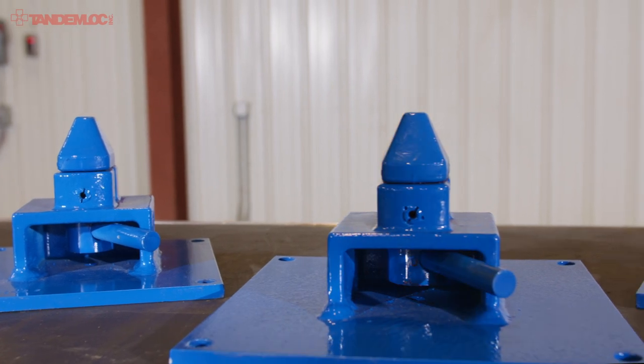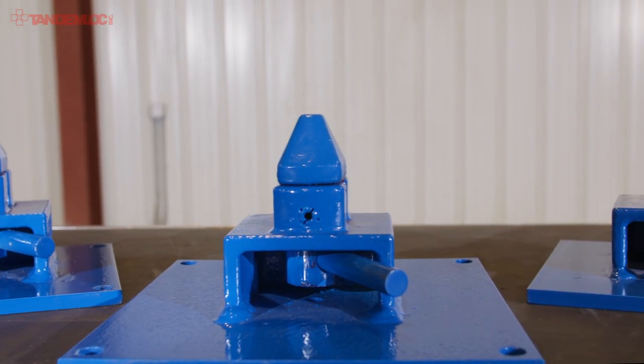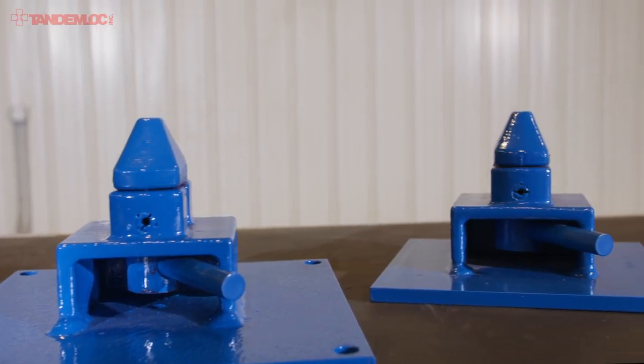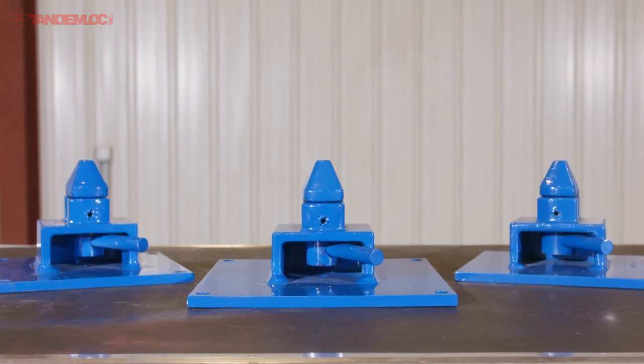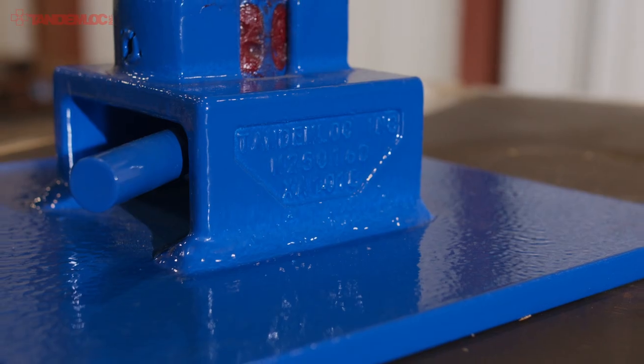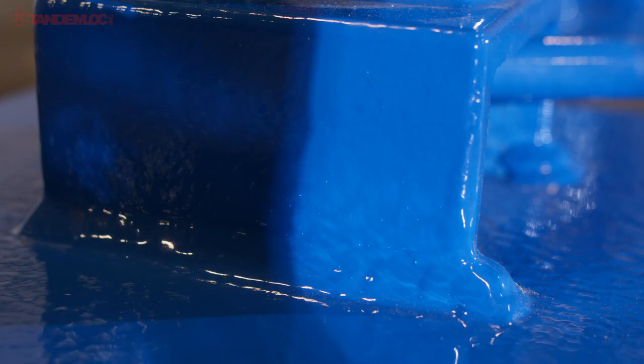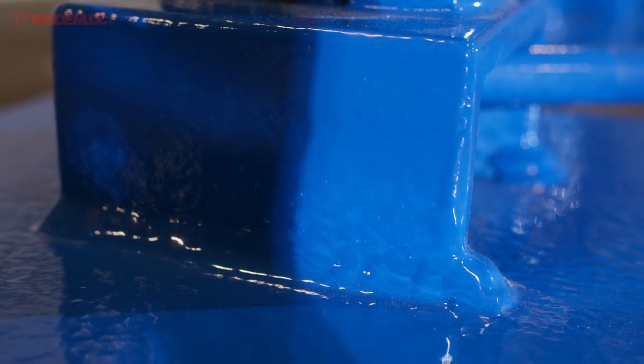These are the fast mount models that we offer already welded to a base plate. Sometimes customers have a surface where they are unable to weld a standard fast mount. So Tantamok offers these models already welded to the base plate, allowing the base plate to be bolted to the surface.